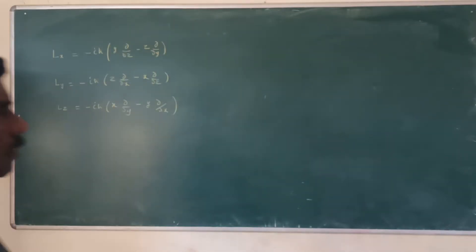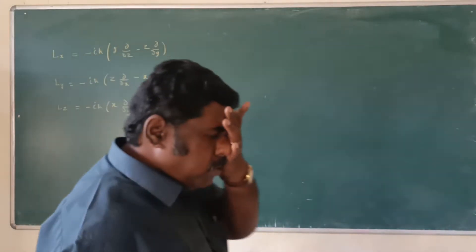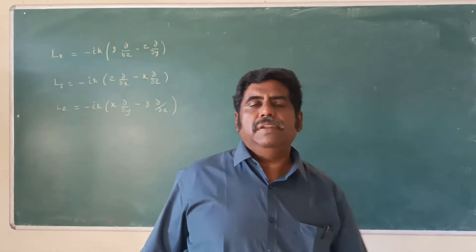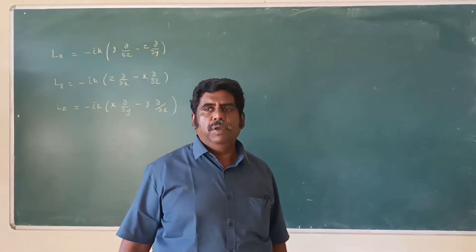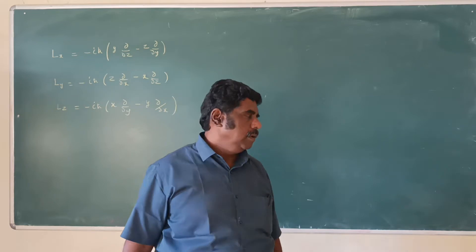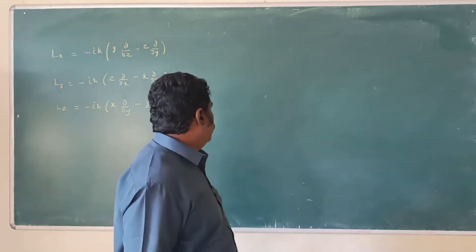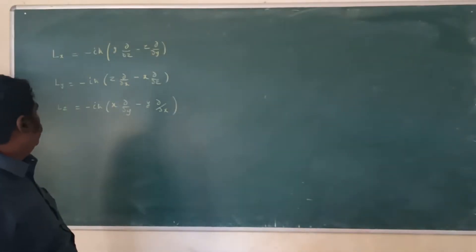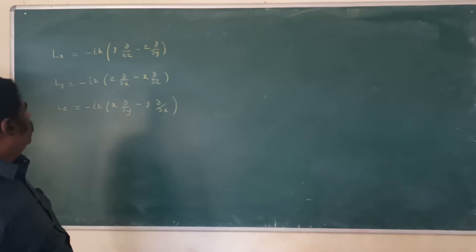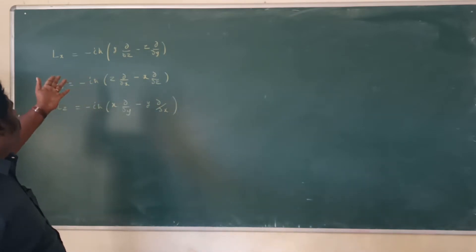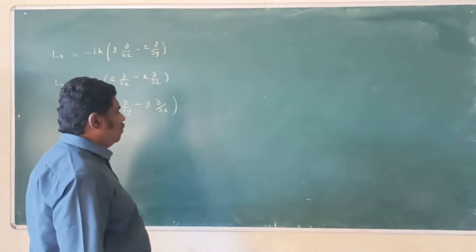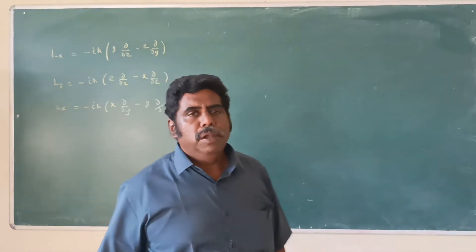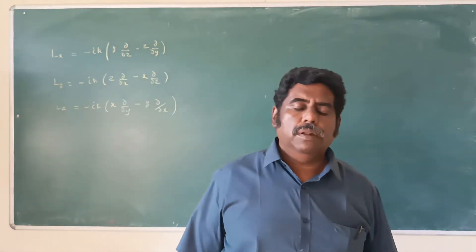In this presentation, we will discuss the commutation relations between Lx, Ly, and Lz. For this, we have to consider the values of Lx, Ly, and Lz. These are the values we arrived at in the last lecture from the algorithm to operate at L equal to r cross p.